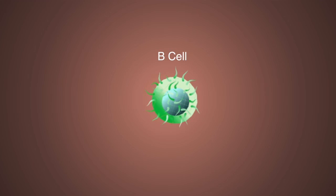B-cells are immune system cells that recognize antigens and trigger a series of immune system actions. When a mature B-cell encounters a pathogen — something like the West Nile virus — there are B-cell receptors on its surface that recognize and bind to a specific antigen. I'll call these B-cell receptors BCRs from now on.